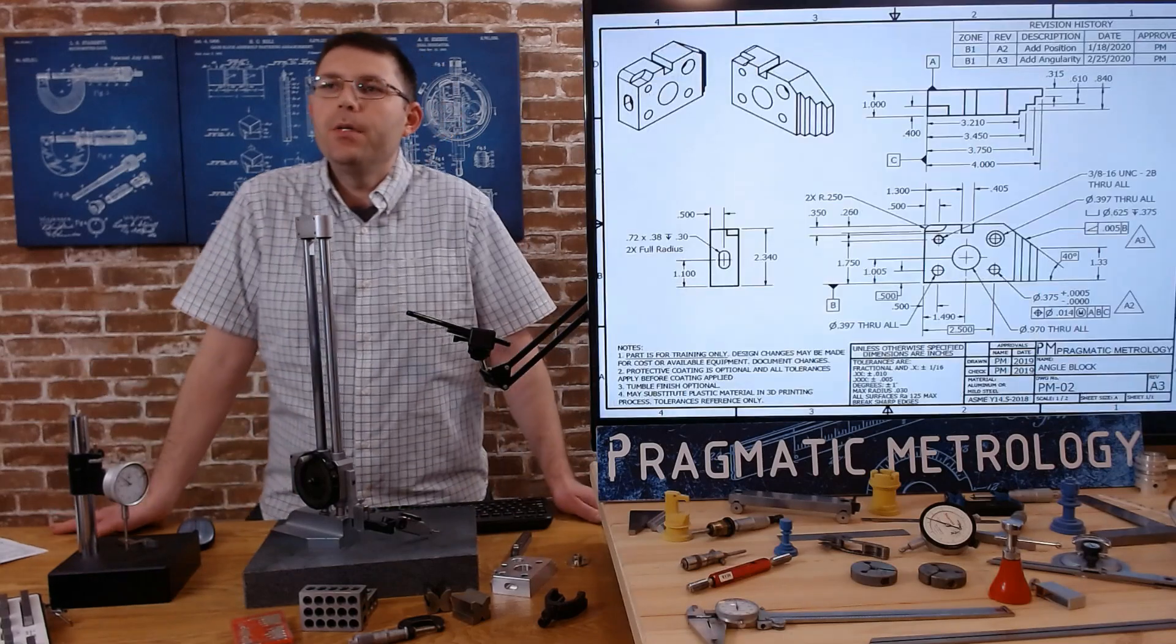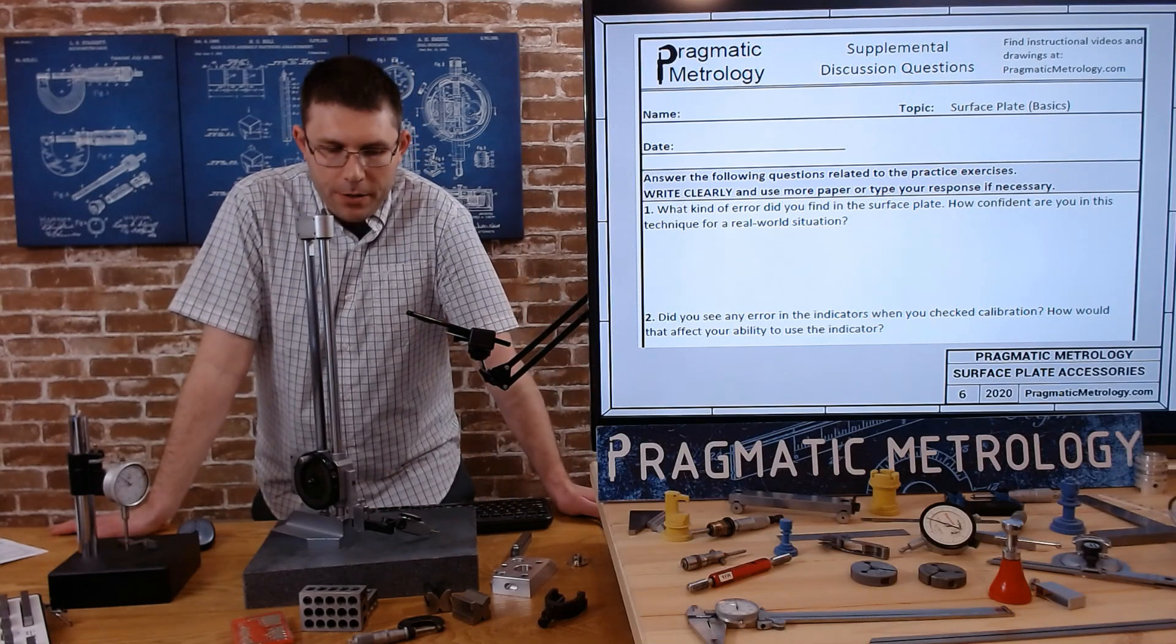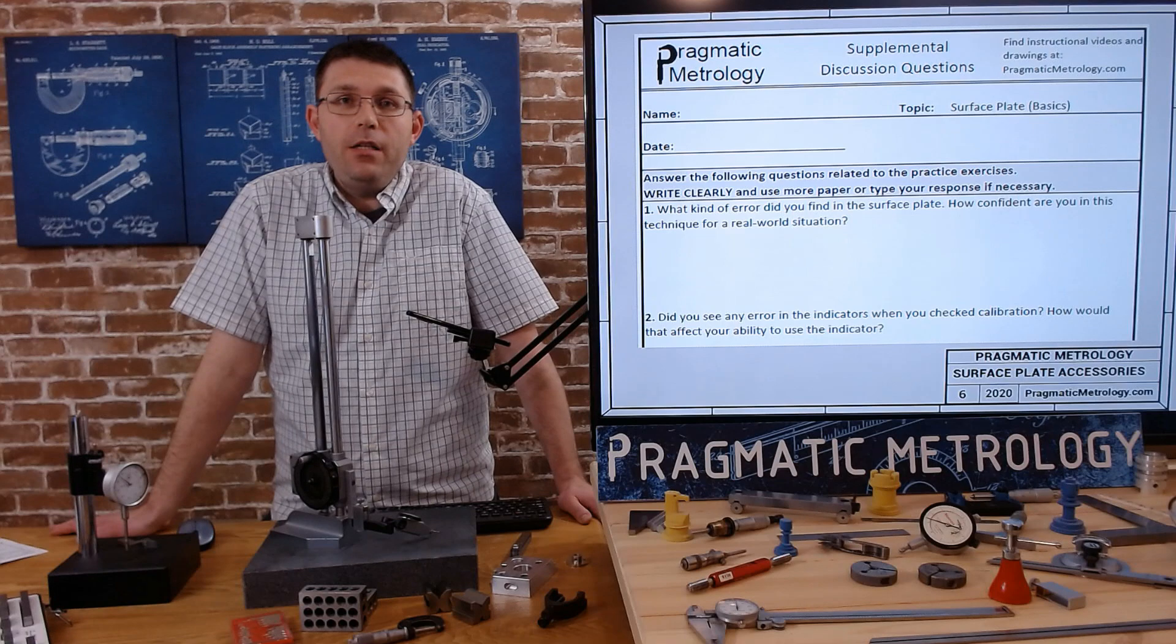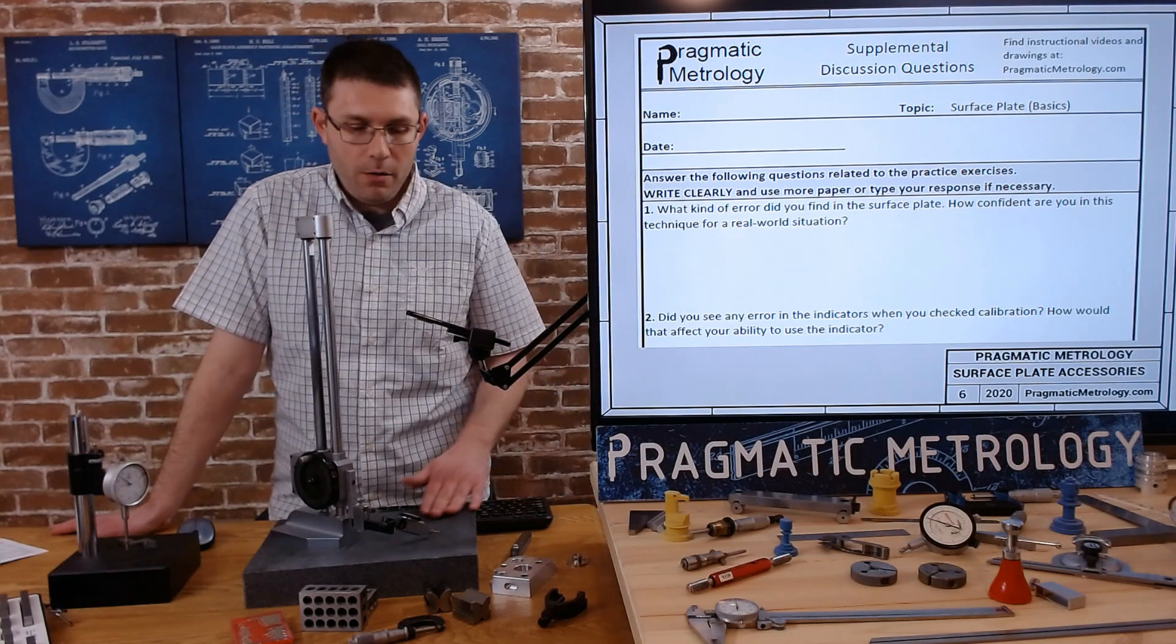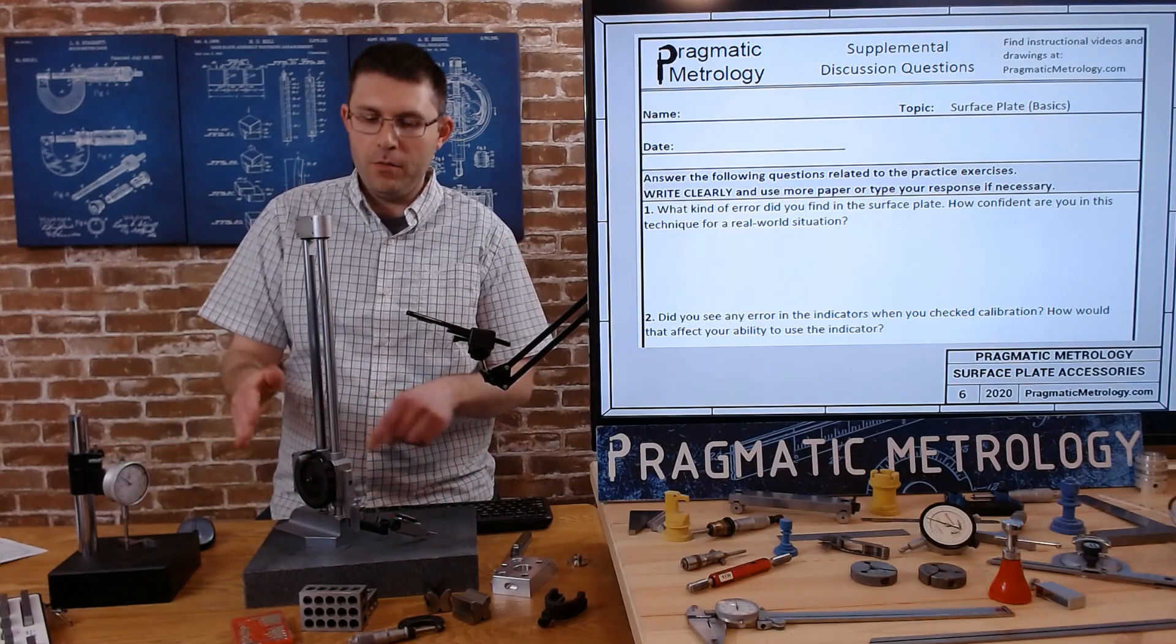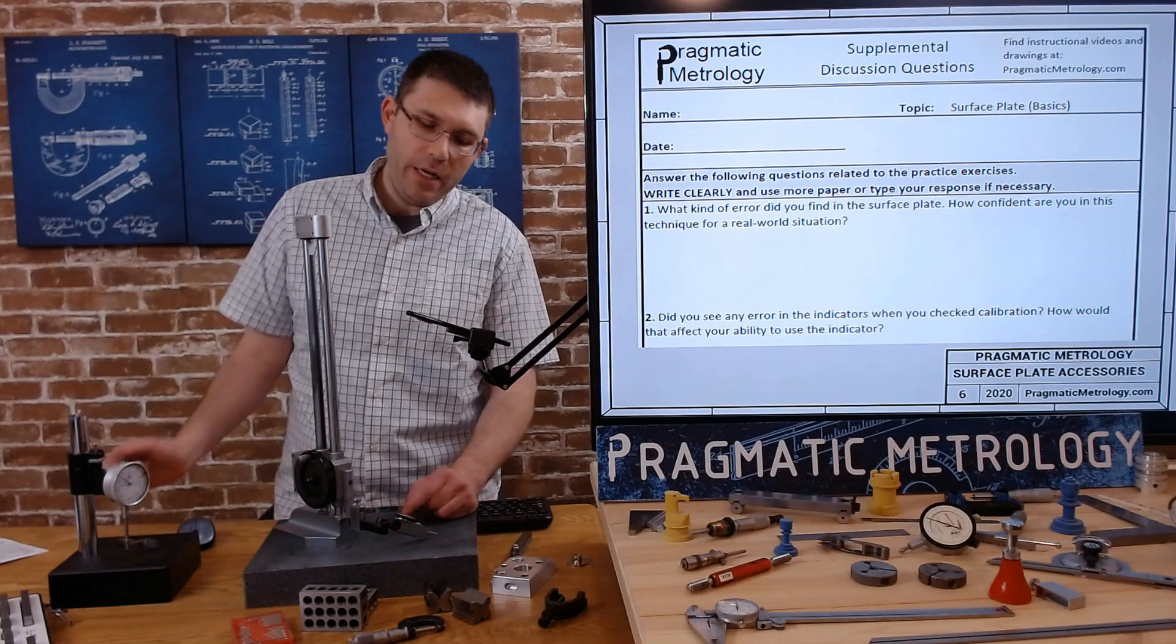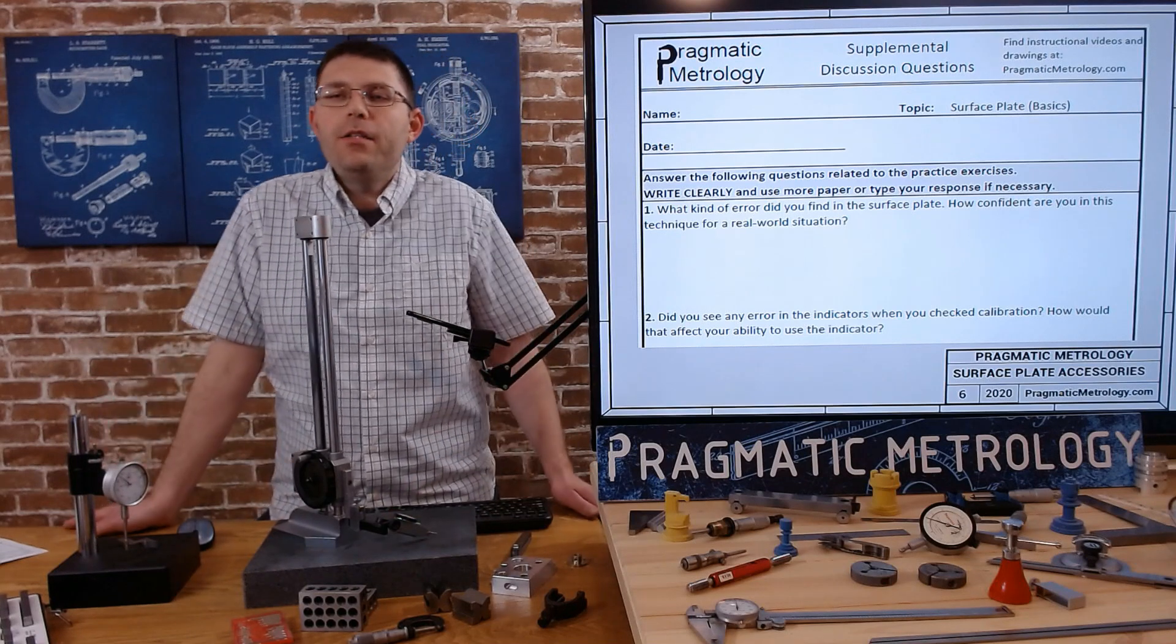We already experimented with the tips and this is the print. We'll talk about a few discussion questions after you've done all these measurements with the height gauge and the drop gauge. What kind of error did you find in your surface plate when you did that check all the way around? How confident are you in this technique? So do you think it's a good technique the way you did it? If you had some errors, it really could be your surface plate. If it hasn't been checked lately, they do wear. I've seen it. I've seen it right where my height gauge sits where I see a lot of wear and I see a dip and doing that method really shows it. Number two, did you see any error in the indicators when you check calibration? So I did these in the videos and I did see a little bit of error in our test indicator, not so much in our drop indicator.